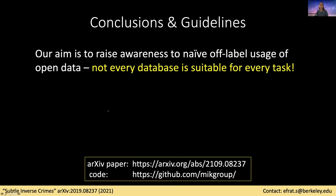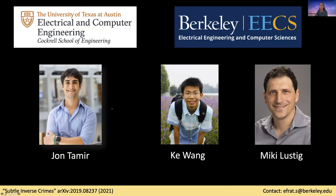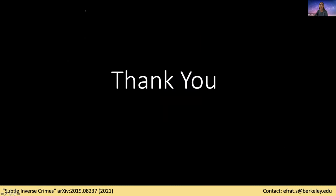To summarize: the aim of this research is to raise awareness to naive off-label usage of open data. There are wonderful databases out there, but not every database is suitable for every task. If you're interested in more details, our arXiv paper is available, and our Git repository — just published a couple of days ago — is available as well, and you're welcome to experiment with all these datasets. I would like to thank my co-authors: John Tamir from the University of Texas at Austin, Keo Wang from our lab, and my advisor Professor Mickey Liston. Thank you, and I will be happy to answer questions.